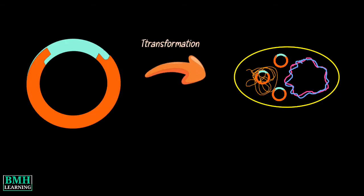In each successful transformation, the expression cassette directs the cell's machinery to make RNA and protein.